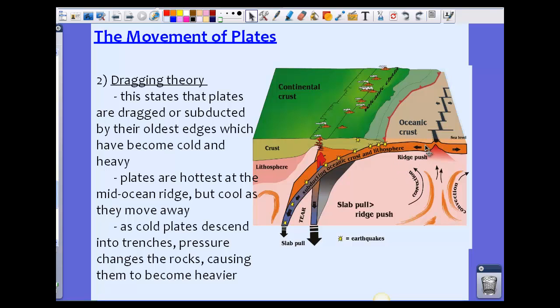As that convection current is moving, the crust itself is becoming colder, cooling down and becoming heavier. We have this crust becoming really heavy and cold, and it's going to be dragged underneath the other crust or plate. This is also called ridge push and slab pull. Ridge push is due to the convection current. As it becomes really heavy and dense, it pulls the rest of the crust down with it. Slab pull, ridge push. This is the dragging theory.